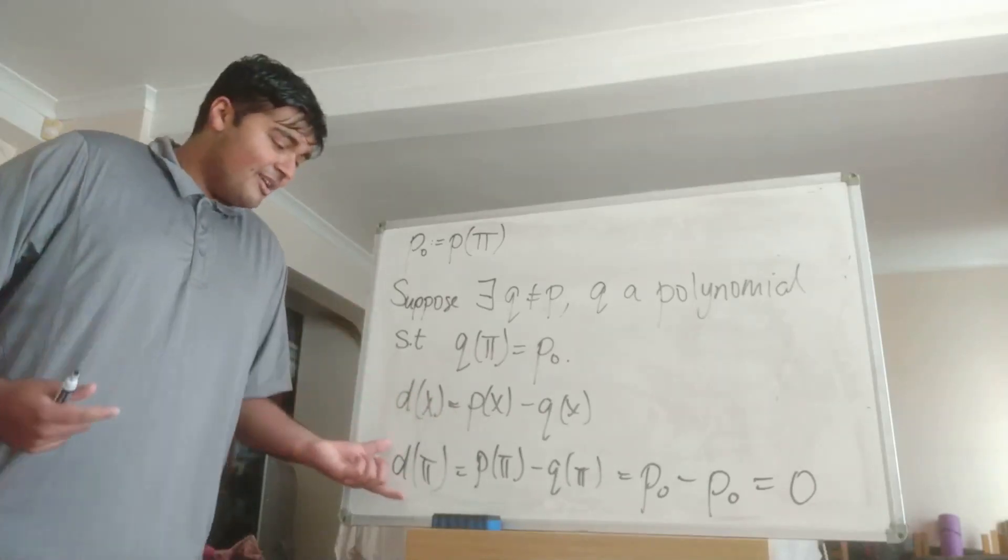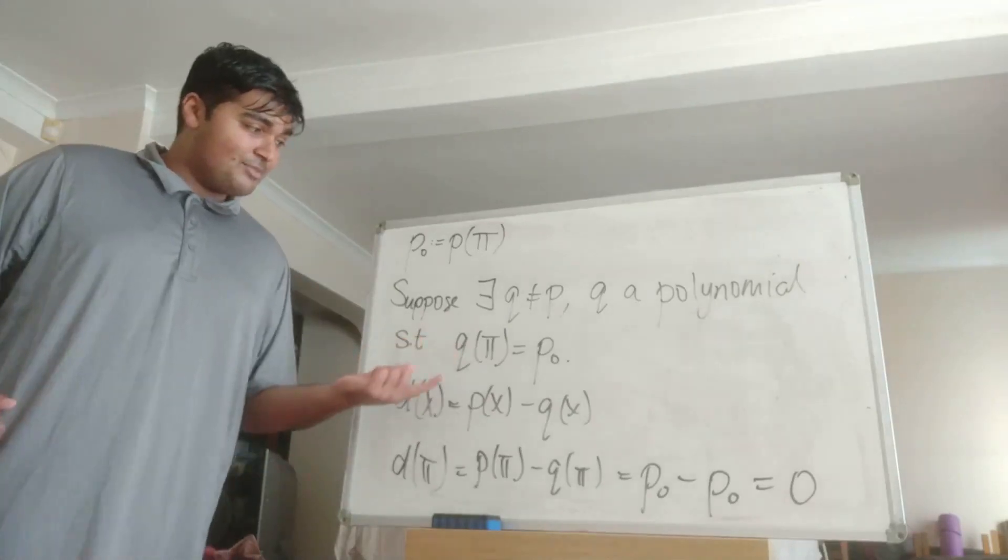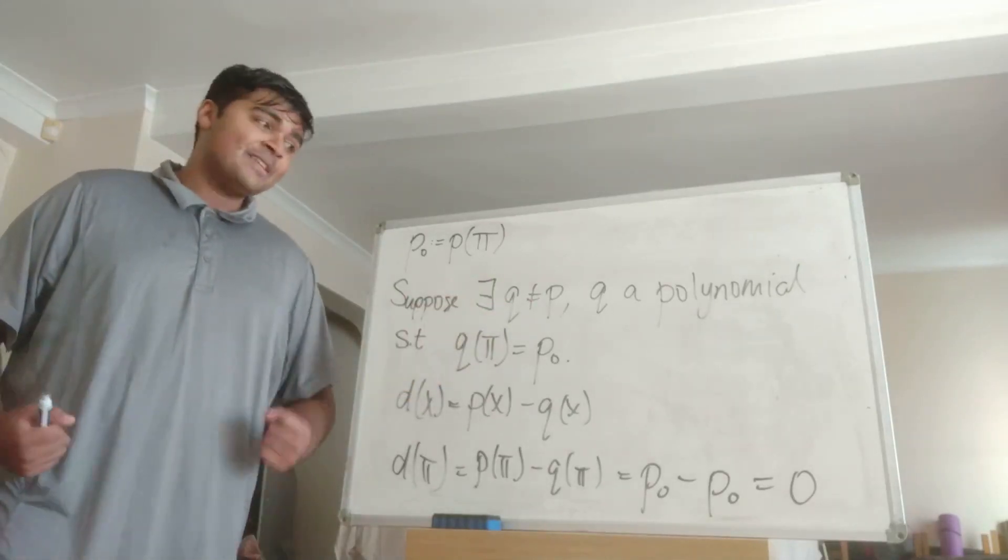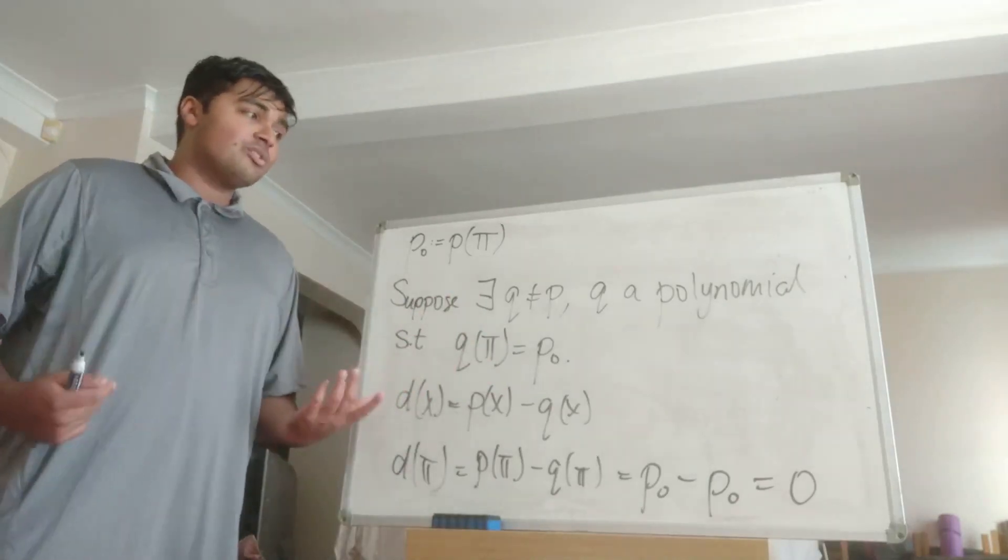But D is a polynomial with rational coefficients and it's non-zero by assumption because we're assuming Q does not equal P. So there's no way when you plug in pi you can get zero. So this is all a contradiction.